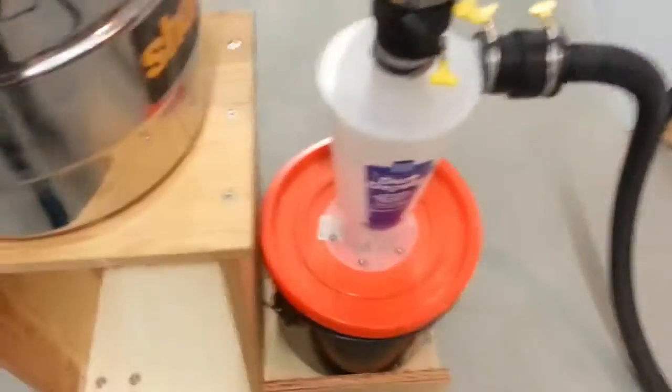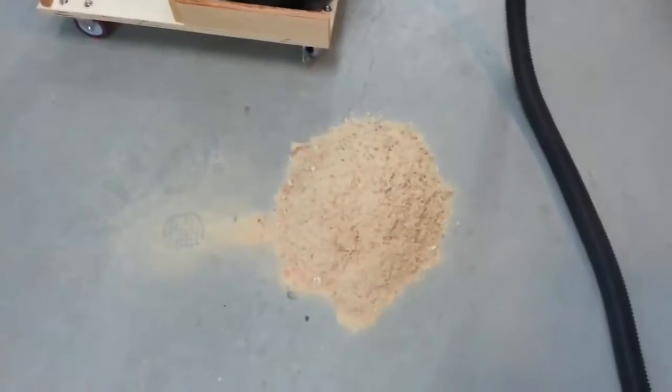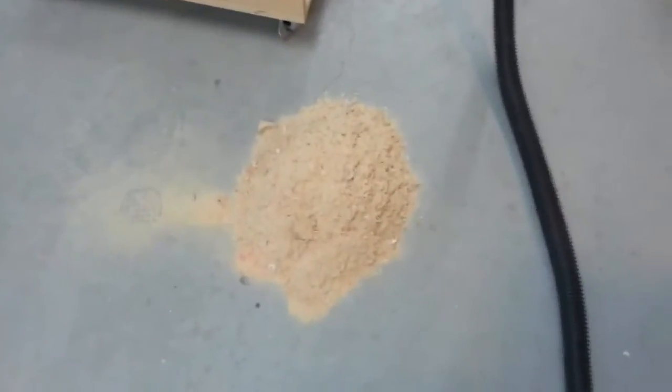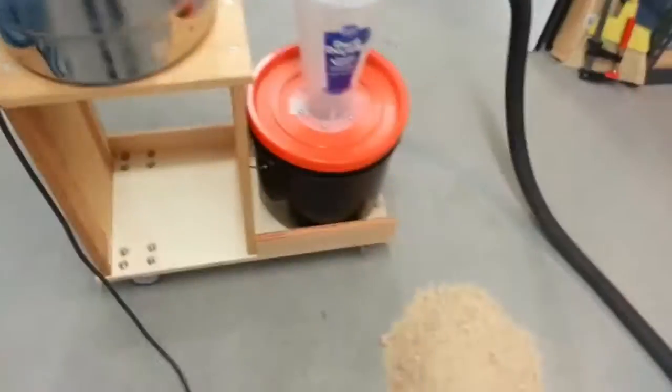So we're looking inside the shop vac and you can see it's empty. No sawdust in the shop vac. And I emptied the bucket out and I poured all the contents of the bucket onto the floor. Now I'm going to close up the shop vac, attach the lid so that it's on.